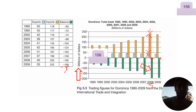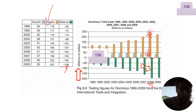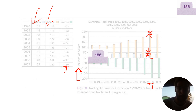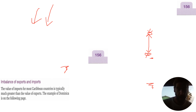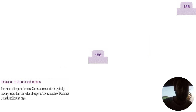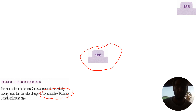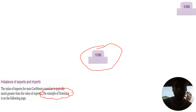These statistics are similar all around the Caribbean. In Curaçao, for instance, we also have way more imports than exports, and the export is much lower than the import. This issue — the difference between export and import — is about the imbalance of exports and imports. The value of imports for most Caribbean countries is typically much greater than the value of exports. I hope this was useful, and I hope to see you during class. If you have questions, ask them below, and don't forget to subscribe.